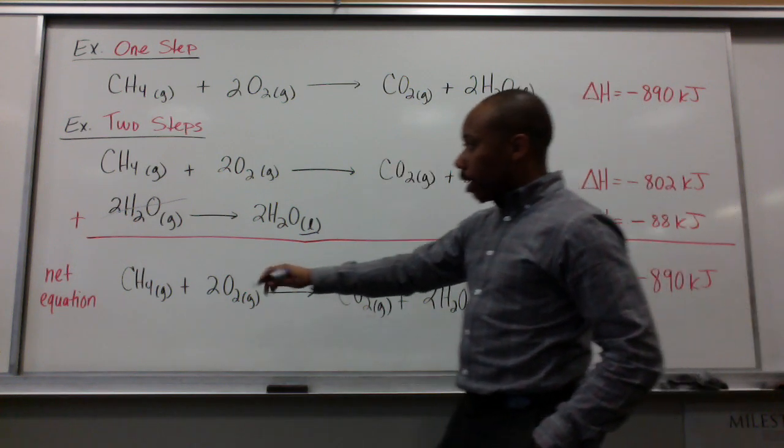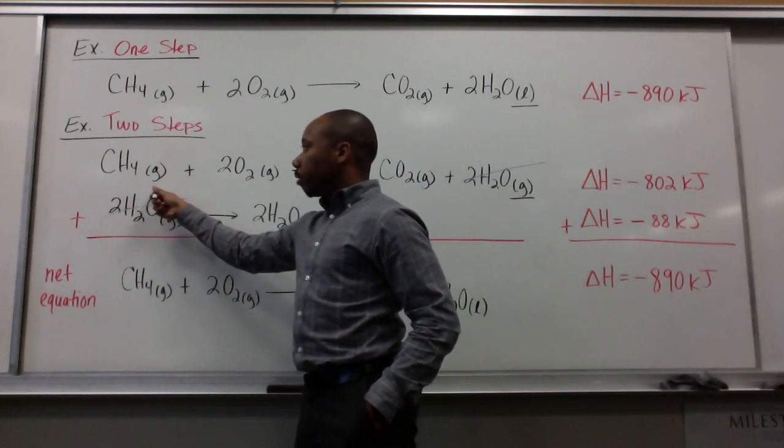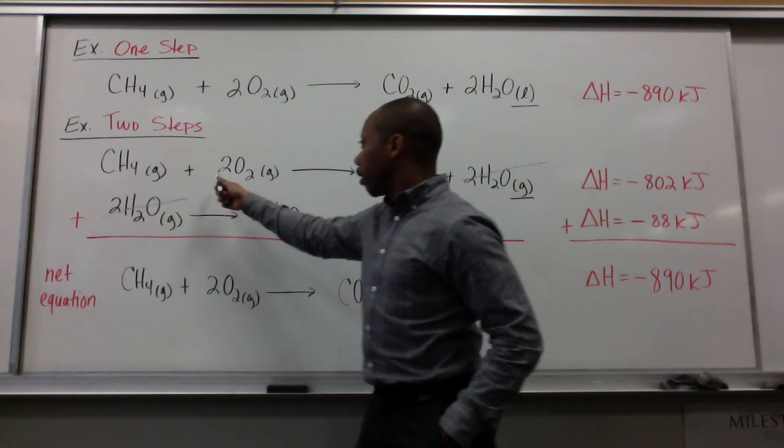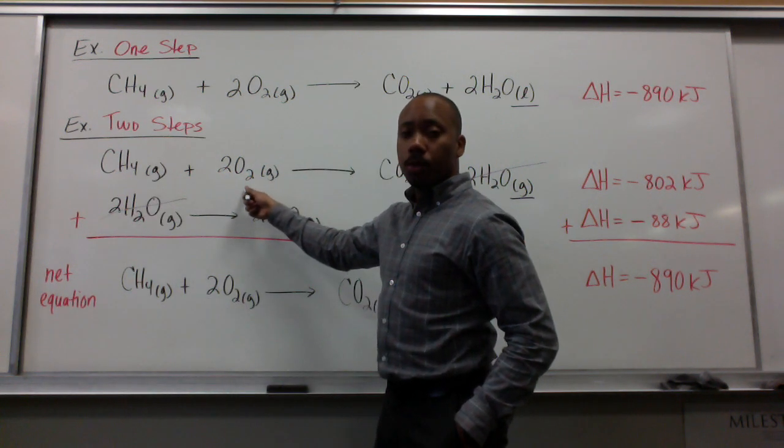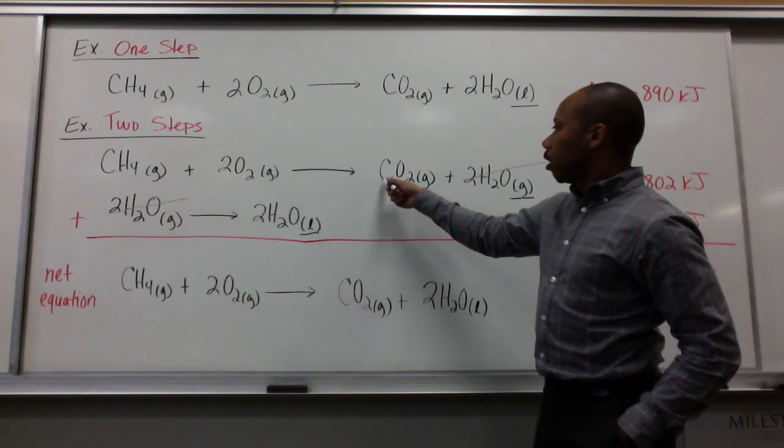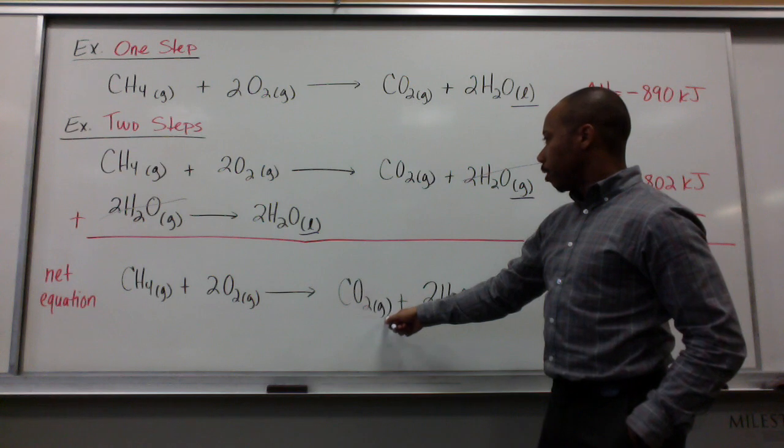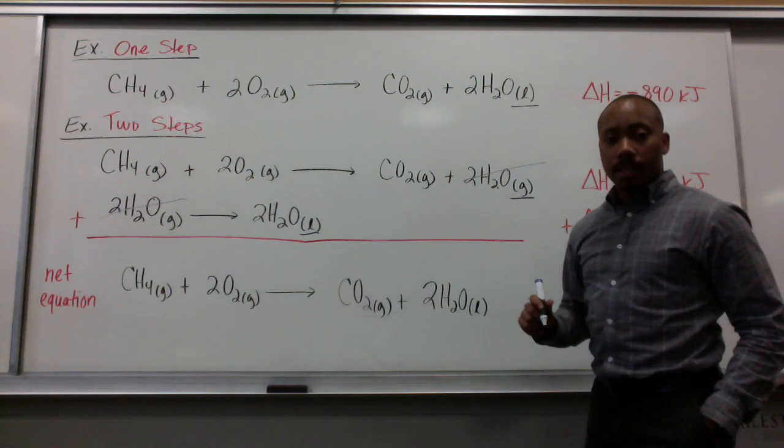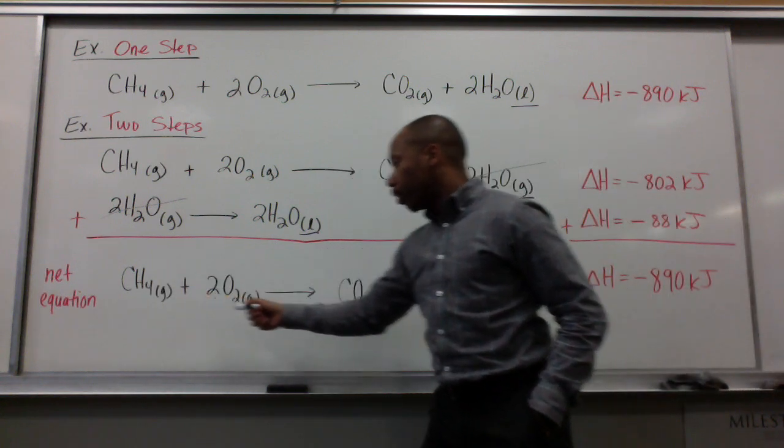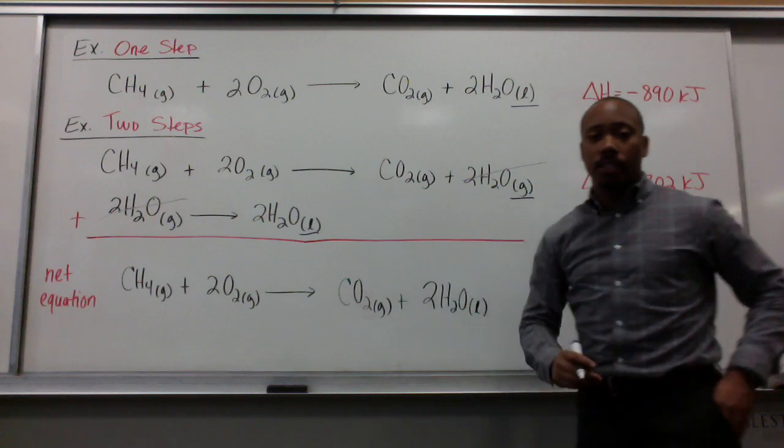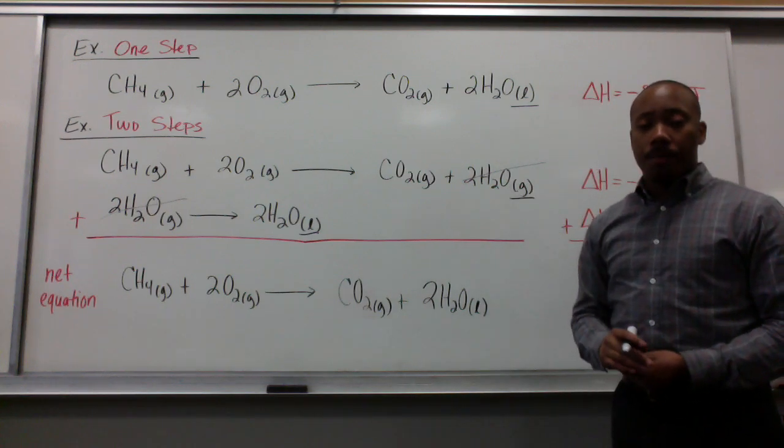Giving you this, CH4, so gaseous methane, reacting with two moles of O2, producing one mole of carbon dioxide and two moles of liquid water. So, this is your net equation, which we can obviously see matches the one from our one-step equation or one-step example up there.